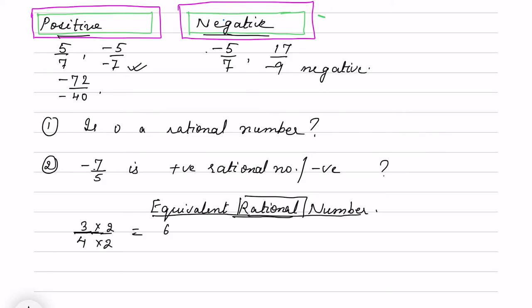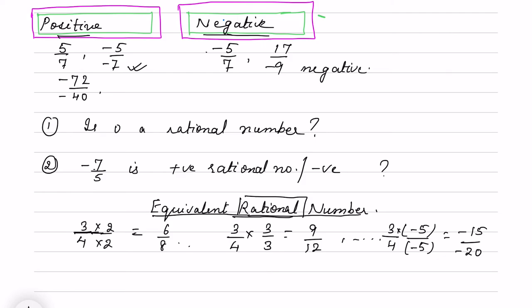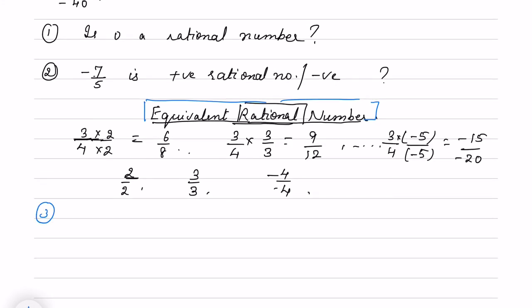We multiply 3 by 4 with the same number — for example, multiplying both numerator and denominator by 2 gives 6 by 8, or multiplying by 3 gives 9 by 12. You can also multiply with minus 5 and still get equivalent rational numbers. You can multiply with any number — 3, 4, or minus 4 — to get equivalent rational numbers. My third question: find 3 equivalent rational numbers of minus 8 by 3.